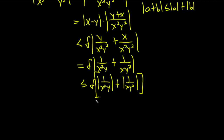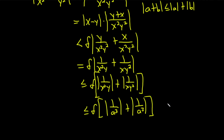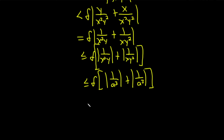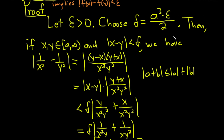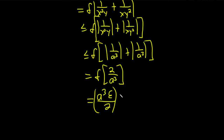This is less than or equal to delta times [1/a³ plus 1/a³], which equals delta times 2/a³. We can drop the absolute values since a is positive. Delta is equal to a³ epsilon over 2, so substituting: (a³ epsilon over 2) times (2/a³). The 2's cancel and the a's cancel, so we get epsilon. That completes the proof. We've shown that this function is uniformly continuous on the set from a to infinity.